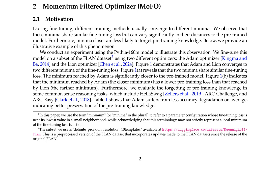The authors note that minima closer to the pre-trained model are less likely to experience forgetting. The paper presents an initial convergence analysis of the MOFO algorithm and conducts experiments on various tasks, demonstrating that MOFO outperforms existing methods in both fine-tuning performance and mitigating forgetting. An illustrative example using the Pythia 160M model fine-tuned on a subset of the Flan dataset shows that different training methods converge to different minima, with closer minima being less likely to forget pre-training knowledge.